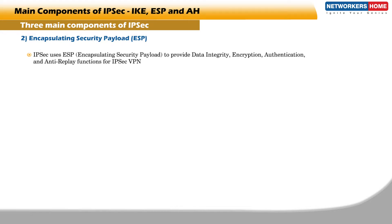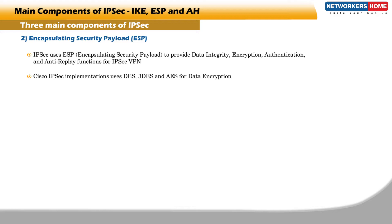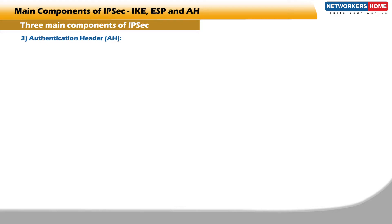Encapsulating Security Payload: IPsec uses ESP to provide data integrity, encryption, authentication, and anti-replay functions for IPsec VPN. Cisco IPsec implementations use DES, 3DES, and AES for data encryption. ESP authenticates the data within the VPN, ensuring data integrity and that it is coming from the correct source.